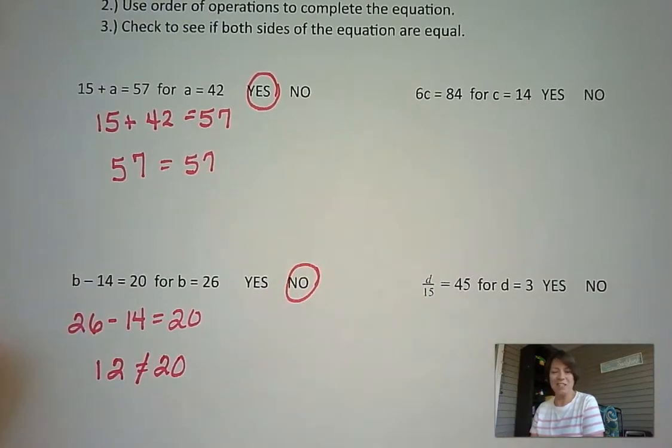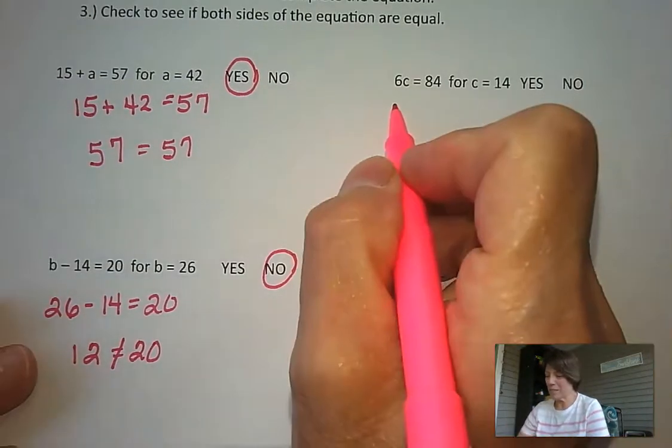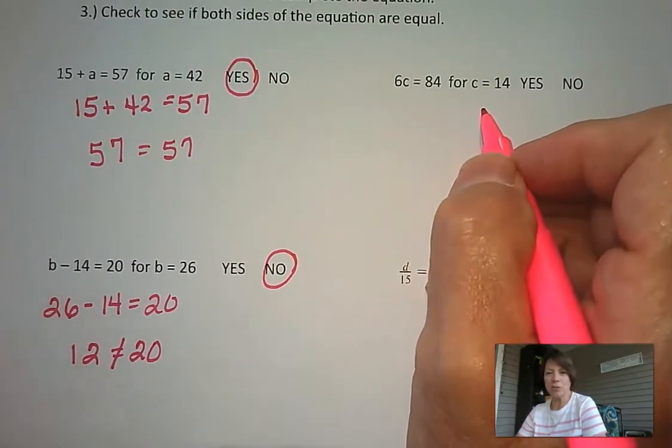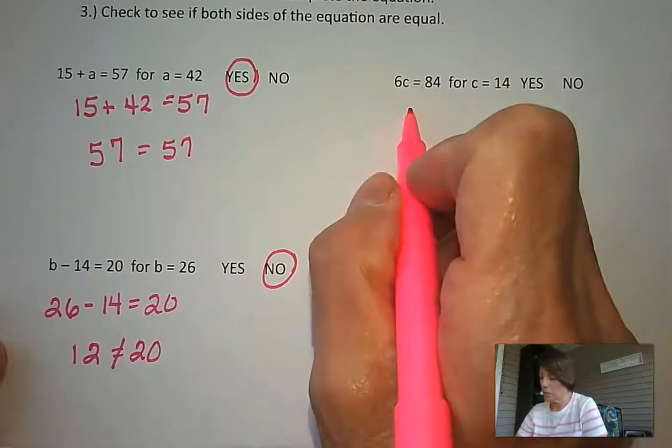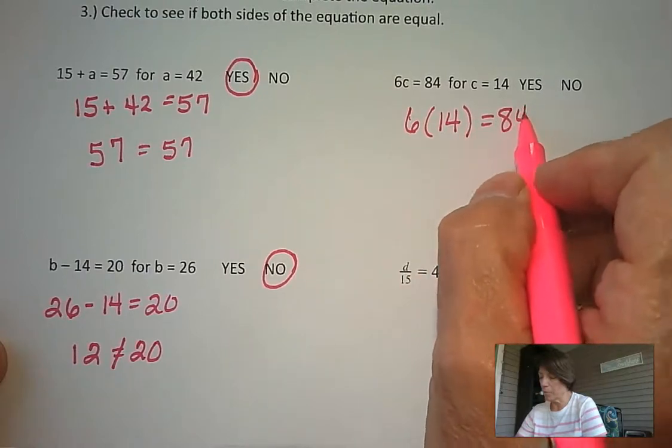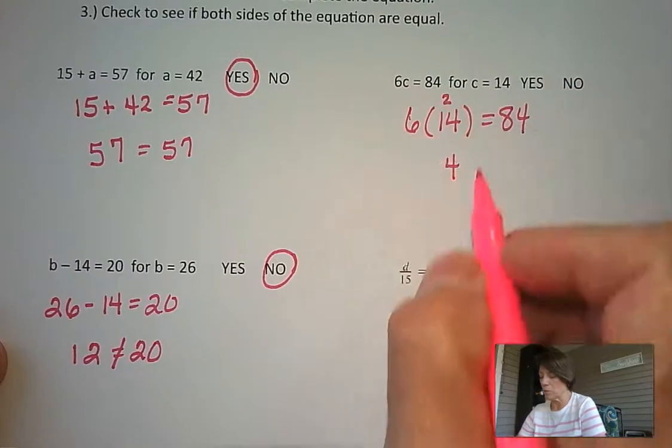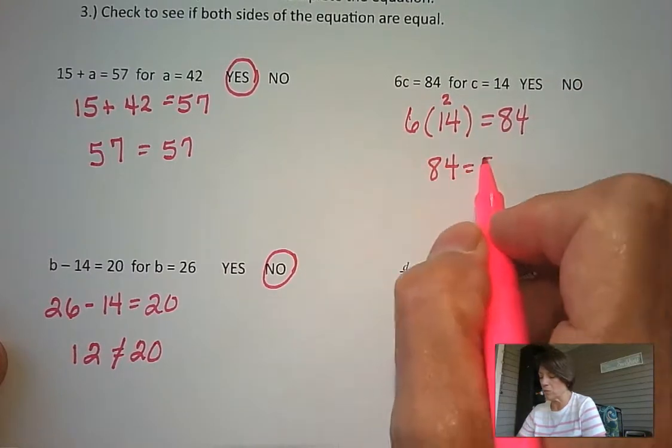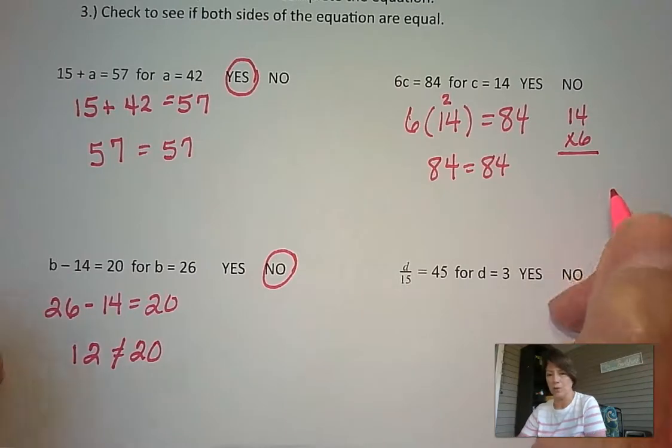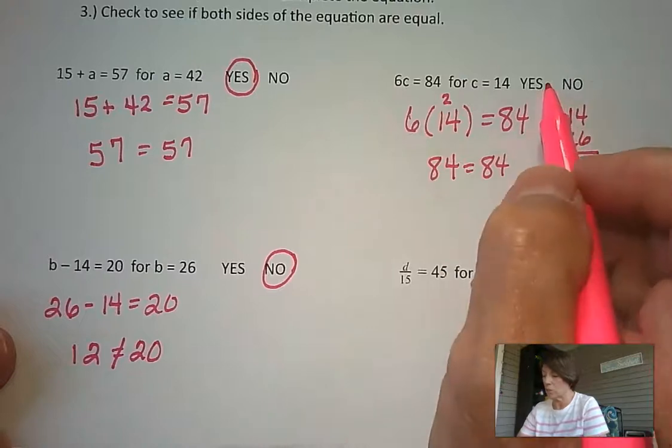Let's look at our next problem. 6 times c equals 84, and we want to check to see if this is true if we substitute 14 in for our c. So 6 times 14 equals 84. 6 times 4 is 24, carry my 2. 6 times 1 is 6, plus 2 is 8, so this is true. These are both equal to 84, so 14 is a solution to this equation. So that's a yes.